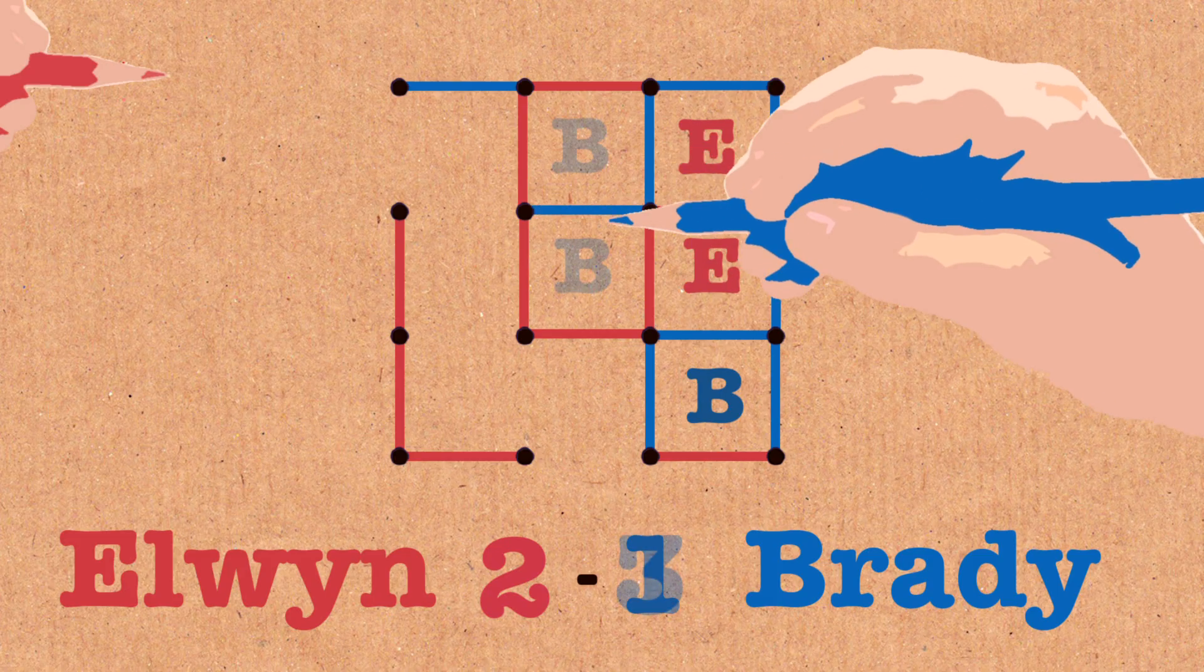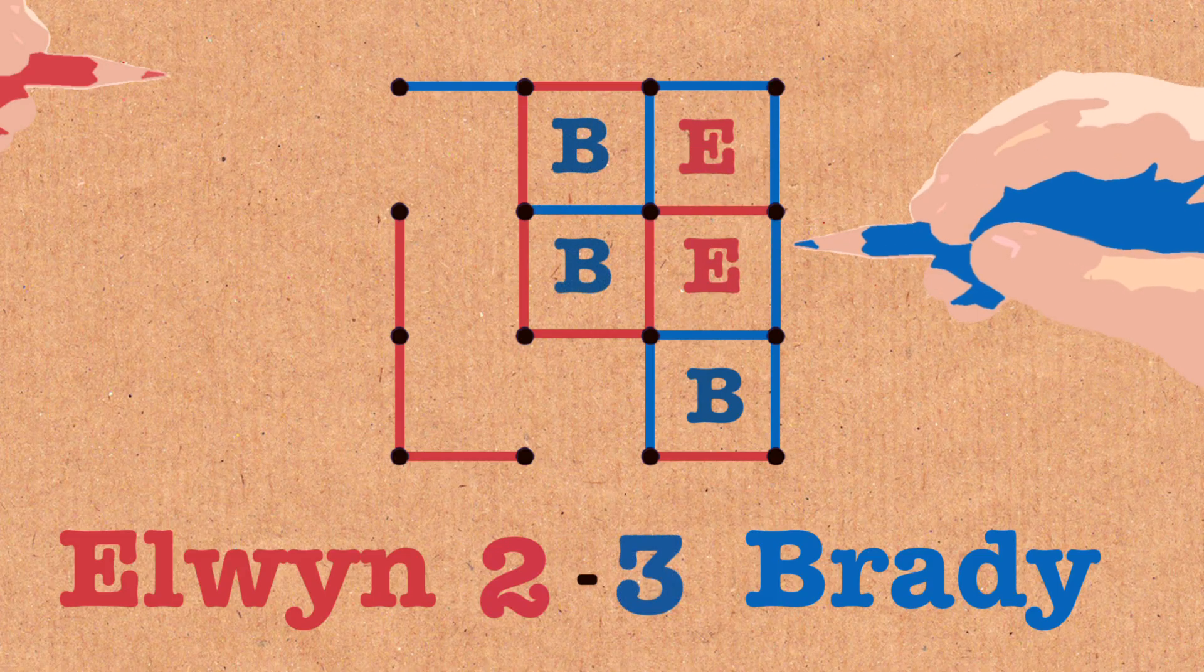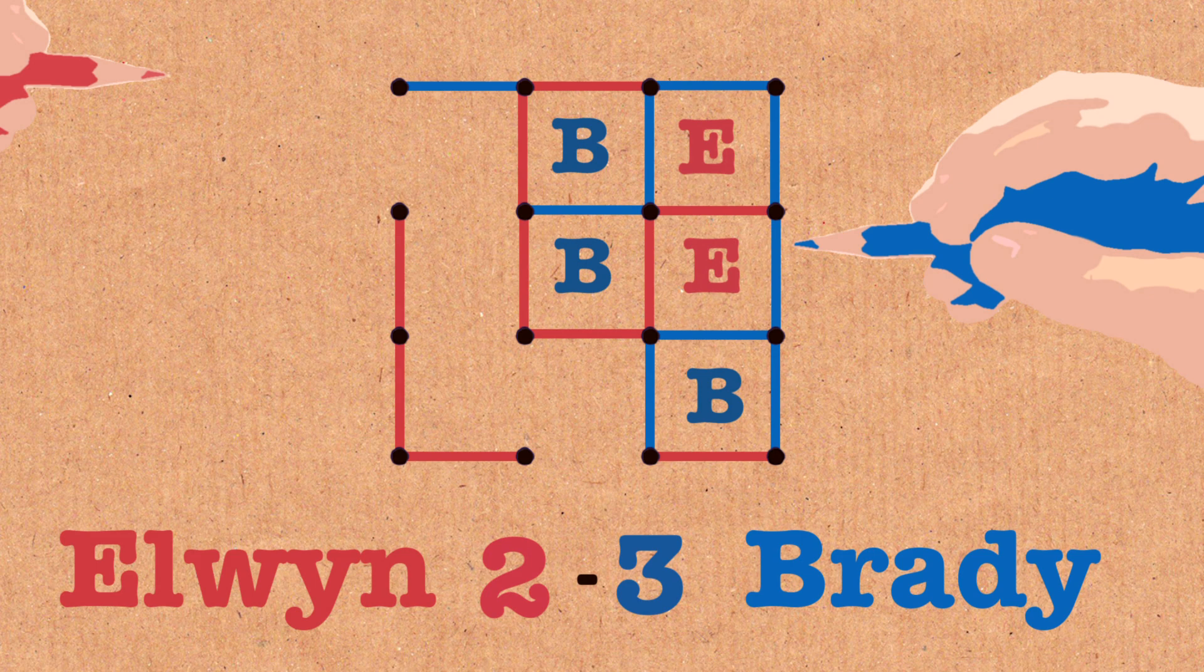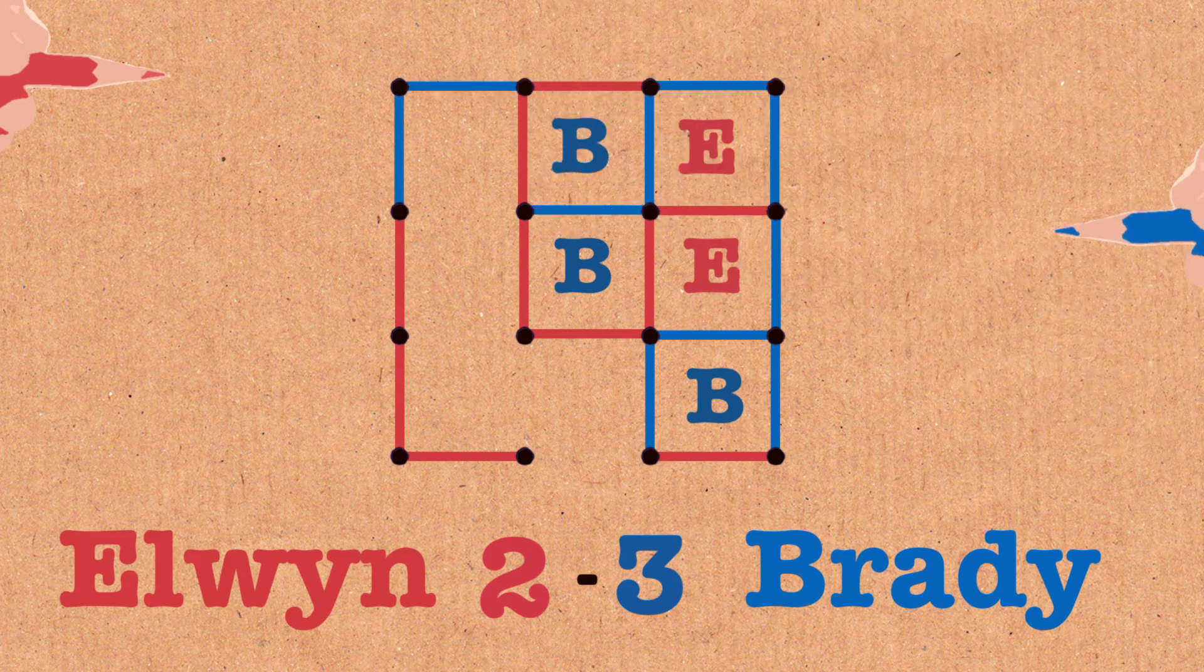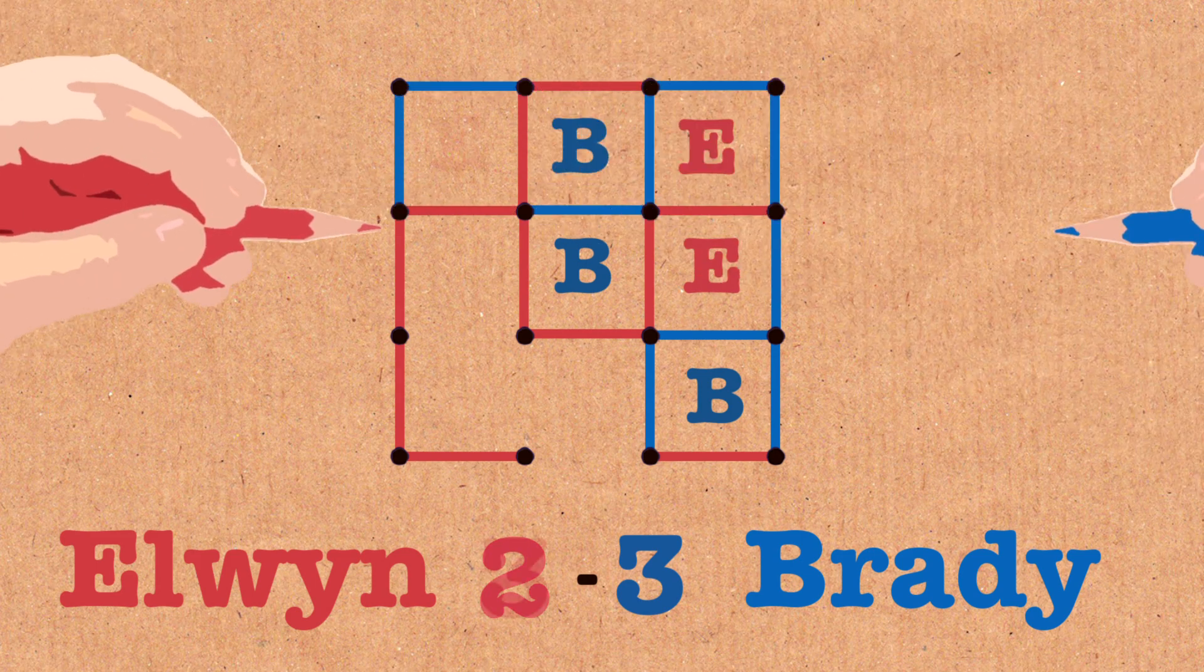Yeah but he gets only one extra move. But having made boxes he gets an extra turn but now he has to take the extra turn, give me the last four. And so I win this game by a score of six to three.